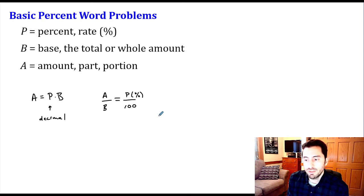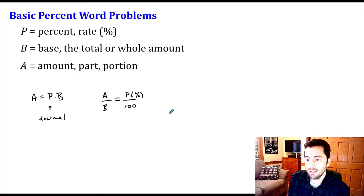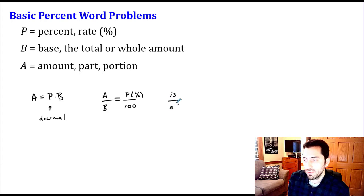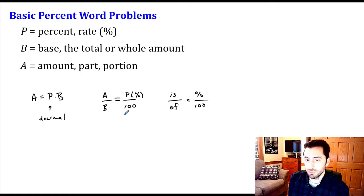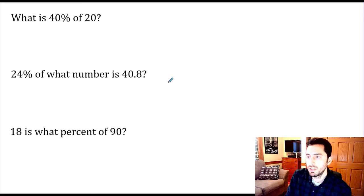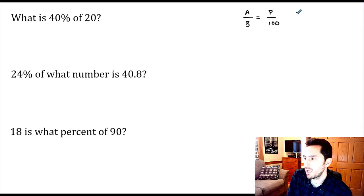In applications, there are key word clues: the word 'is' will indicate the amount, and the word 'of' will indicate our base or whole amount. The percent sign or rate will be our percent. So our proportion is: part over base equals percent over 100, or equivalently, 'is' over 'of' equals percent over 100.